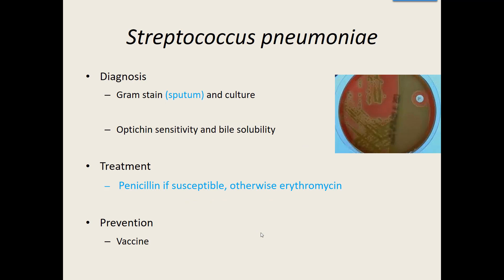They usually gram stain a sputum sample, grow it out, and look for that alpha hemolysis. They look for sensitivity to the antibiotic optochin, because most other alpha-hemolytic strep are resistant to it. They also look to see if it's sensitive to bile — this bacteria, if put in bile in a lab, will dissolve, unlike the next group of bacteria. Treatment: penicillin is generally the top treatment, erythromycin if that's not working. We do have a vaccine for this bacteria, highly encouraged for elderly individuals and those living in close quarters like dorms.